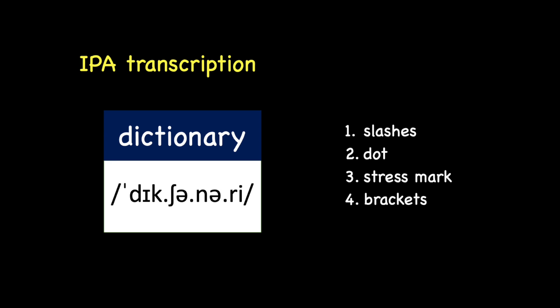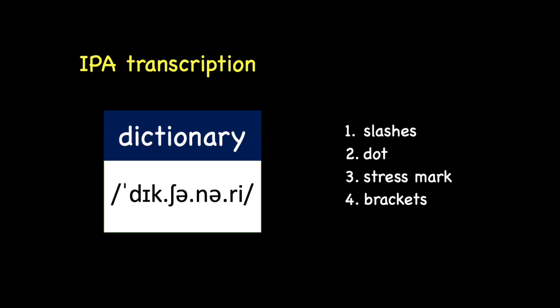So, whenever you see a word with two slashes, it means the pronunciation of the word. Also, the words are sometimes separated with dots. These dots tell us how many parts of the sound a word has. For example, the word 'dictionary' — the dots actually separate the word into four parts, so we know that there are four syllables in this word.